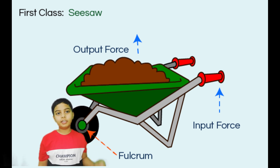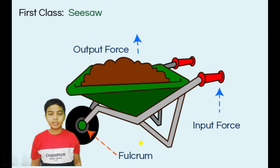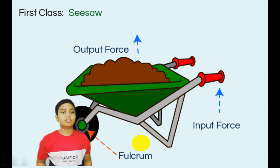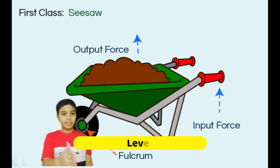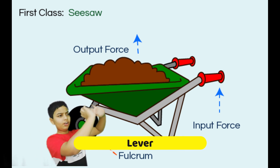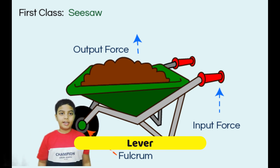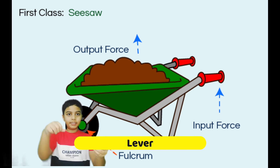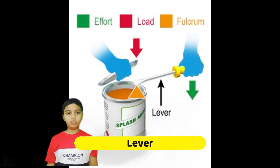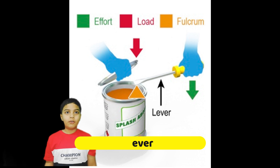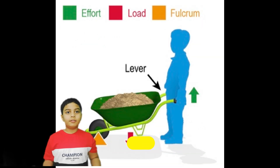Let's talk about levers first. A lever is a long rod that can be used for cutting things, moving heavy objects, and for opening things. A bottle opener, a scissor, a nutcracker — all these things are levers.